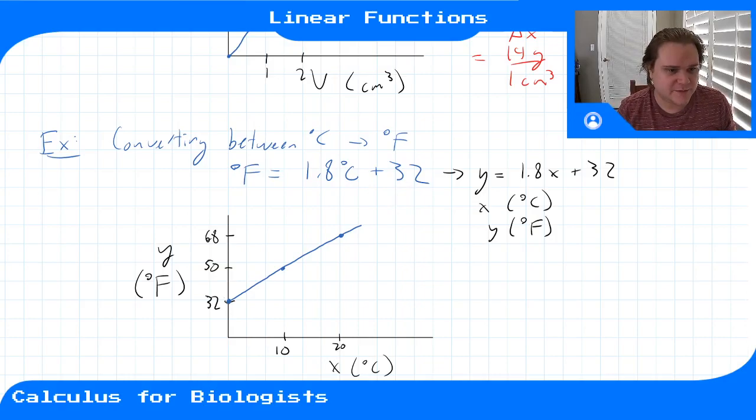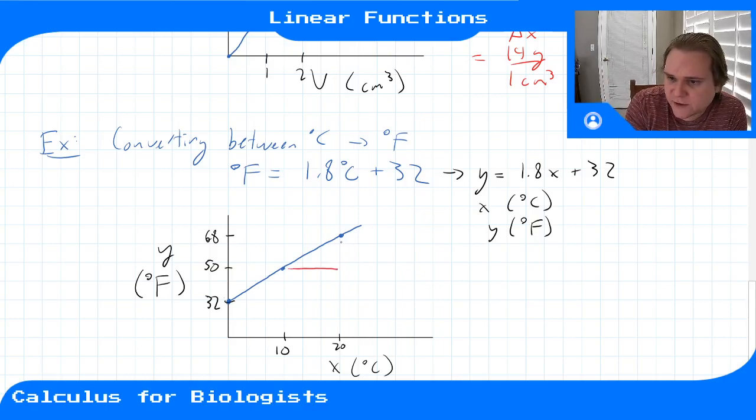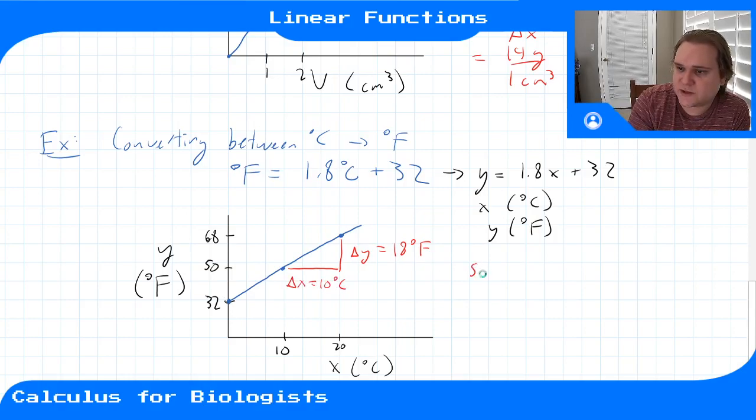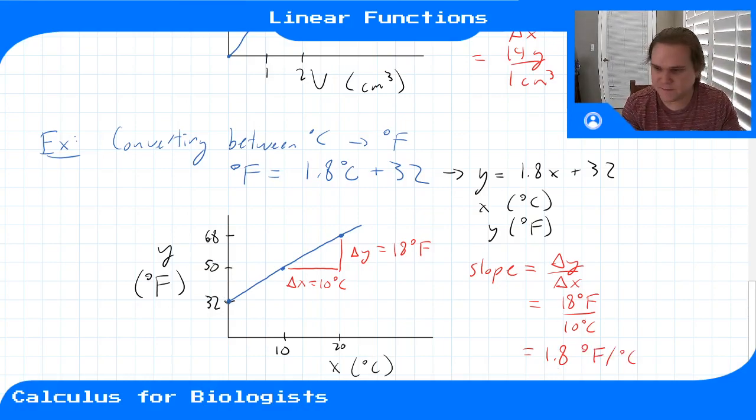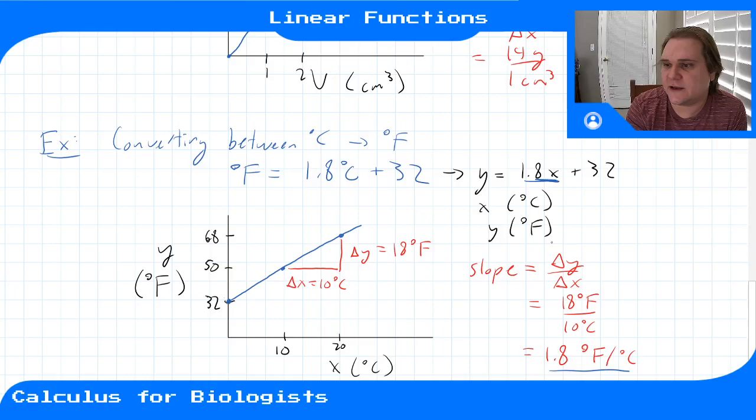We can check the slope to make sure it matches up. If we look between these two points, our change in y - we went up by 18 degrees Fahrenheit. And our change in input - we went up by 10 degrees Celsius. So our slope, change in output over change in input, delta y over delta x, is 18 degrees Fahrenheit over 10 degrees Celsius, which gives us 1.8 degrees Fahrenheit per degree Celsius. That matches up with the slope we had and provides the appropriate unit conversion from Celsius to Fahrenheit.